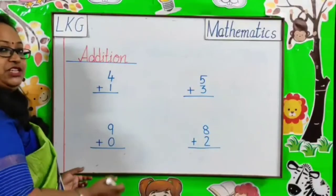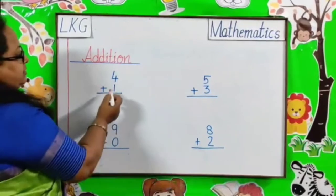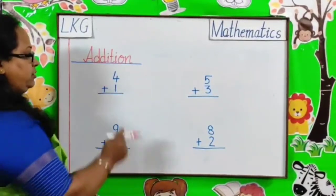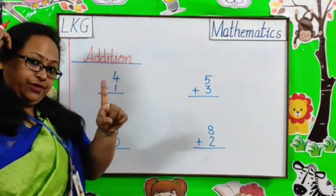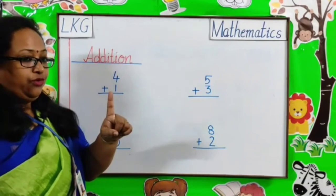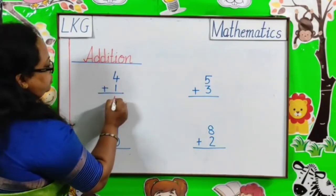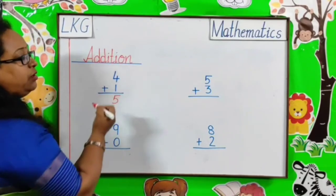Next. I will teach you addition vertically. Our first question is 4 plus 1. 4 in my mind and 1 finger. 4, then 5. 4 plus 1 is equal to 5. We will write the answer right below number 1.